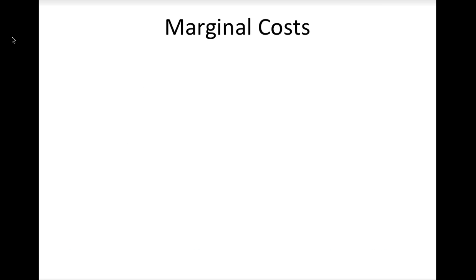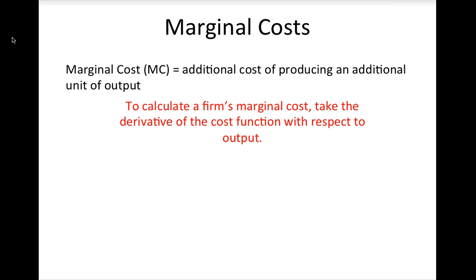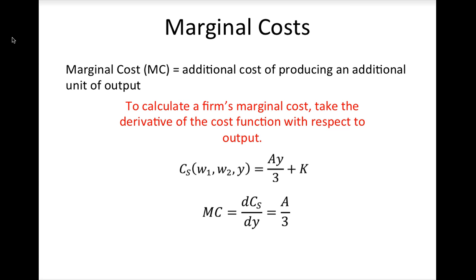The last type of cost we care about when analyzing a firm's decisions are its marginal costs, which measure the additional cost of producing an additional unit of output. As with any marginal concept, we calculate marginal costs by taking the derivative of the firm's cost function with respect to output. For our example, the firm's marginal costs are simply a divided by 3, meaning this firm has constant marginal costs — though note that this will not always be the case.